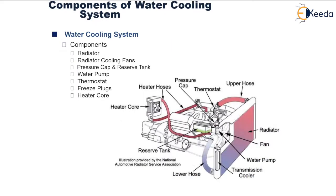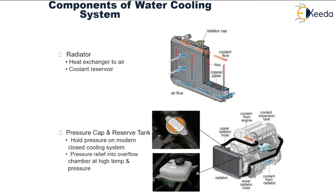The different components of a water cooling system include: the radiator, the radiator cooling fans, the pressure cap and reserve tank, the water pump, the thermostat, the freeze plug, and the heater core. The radiator exchanges the heat carried away by the coolant from the engine jacket to the air — it works as a heat exchanger and also as a coolant reservoir.